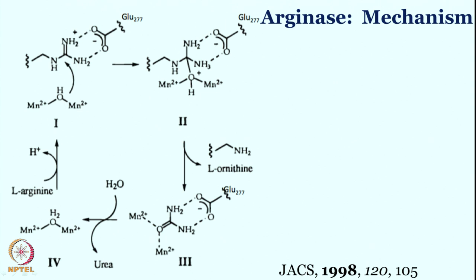Urea is coordinated between the two manganese centers and is supported by glutamate 277. Subsequently, one water molecule comes in and produces urea. Then the water molecule bridges between the two manganese centers, which can be deprotonated due to the dimanganese center — the pKa value of this water is such that at pH 7 you can deprotonate this water molecule to regenerate the manganese 2+ manganese hydroxo species.